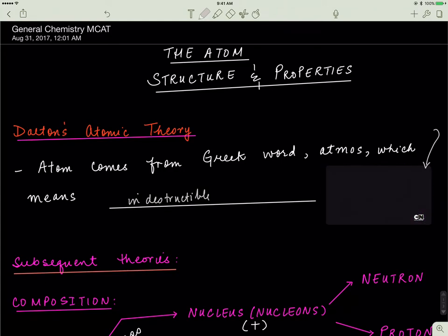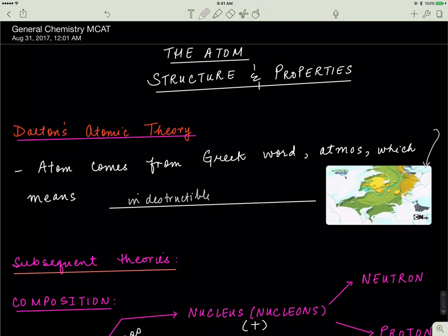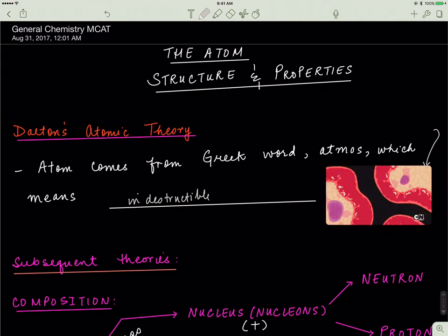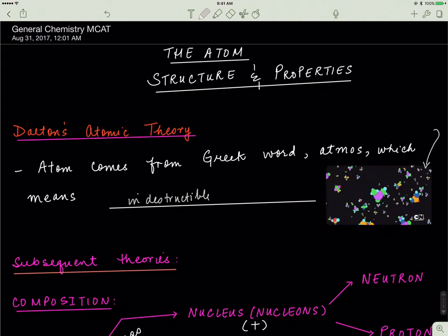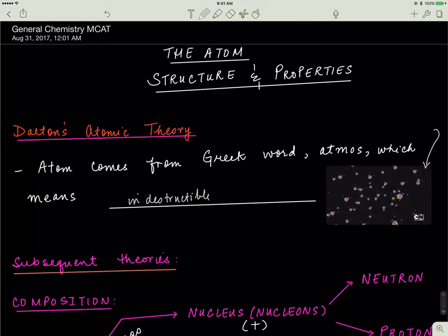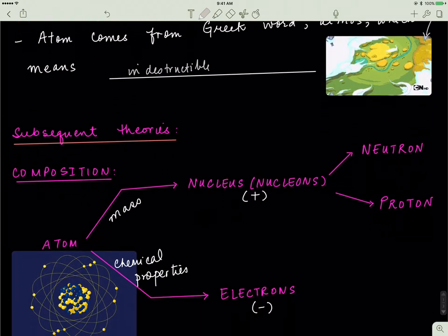So the word atom came from Dalton's atomic theory, which means that Mr. Dalton said that atom comes from the Greek word atmos, which means indestructible. But further theories said that's not right. You can break down the atom even more. So that's what we're interested in right now.